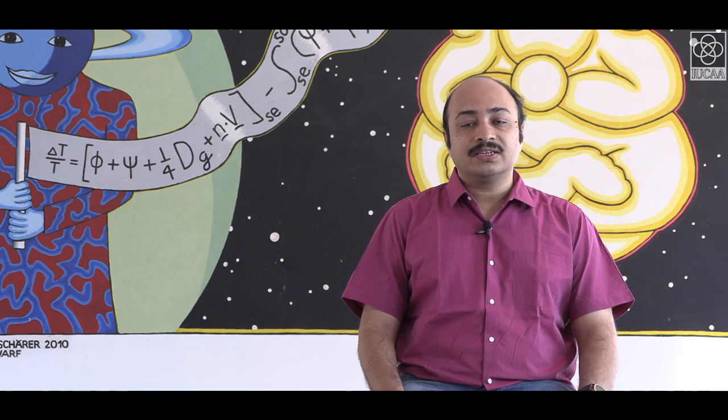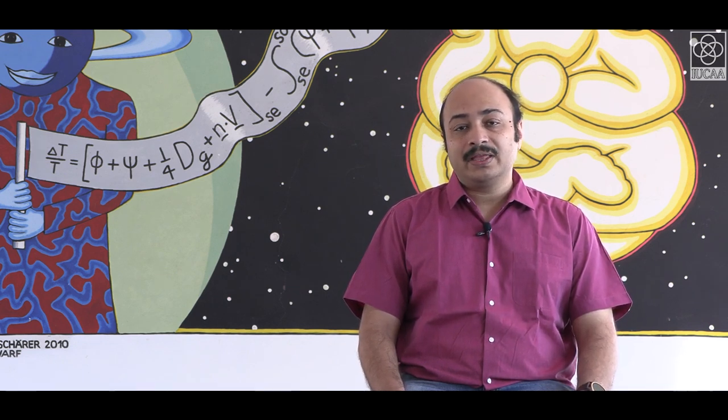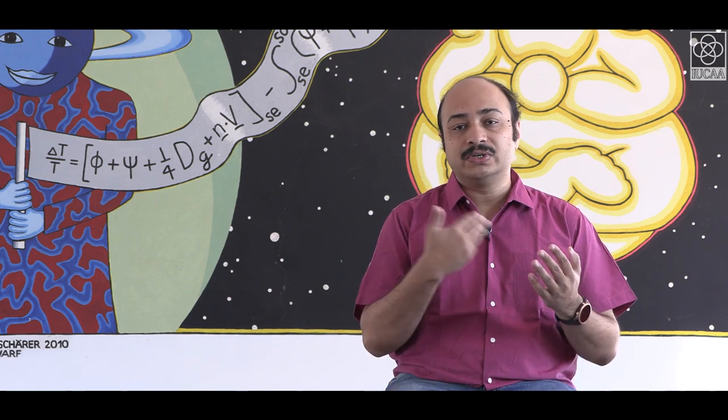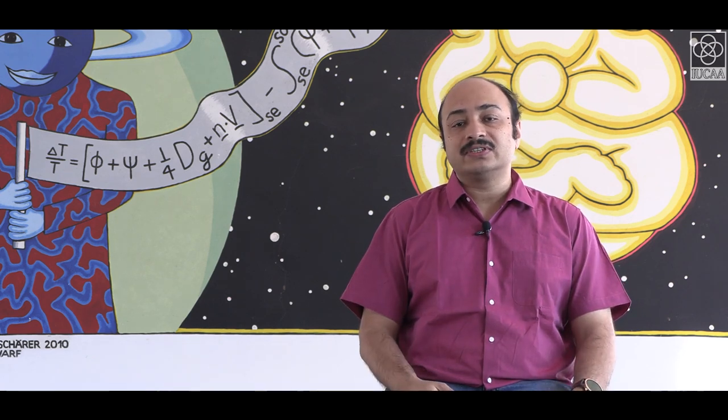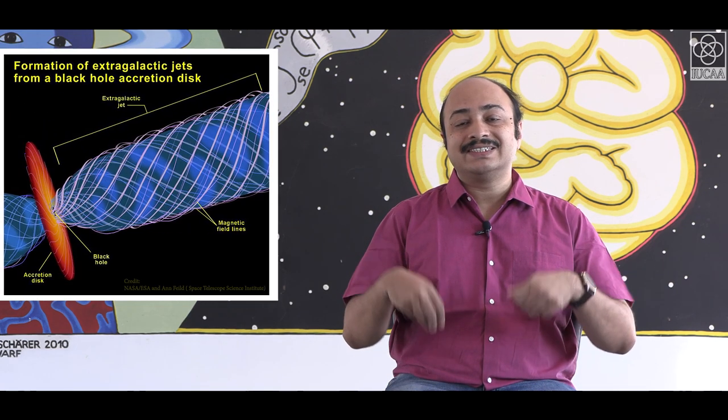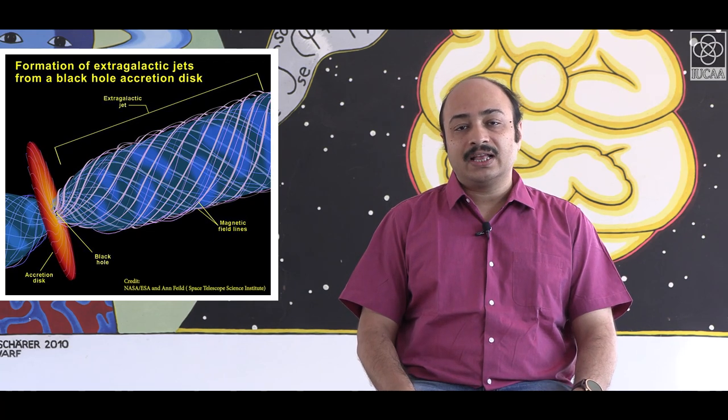It is sort of counter-intuitive that black holes will actually emit a jet, but as gas swirls around the black hole and falls inside, a part of it is ejected by the magnetic fields surrounding the black hole.